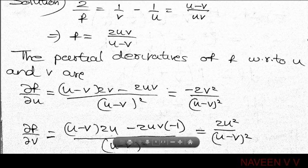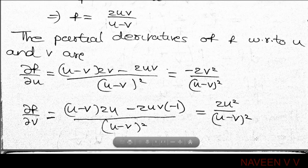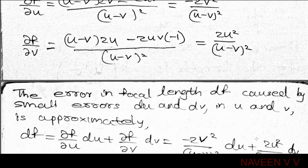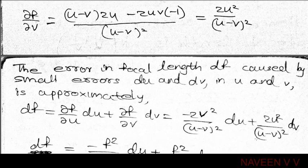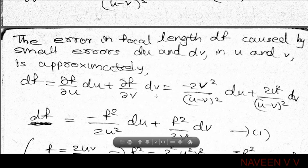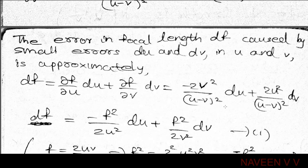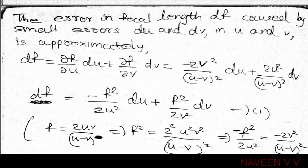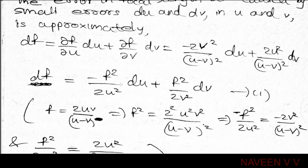The total differential is df = (∂f/∂u)du + (∂f/∂v)dv, which equals [minus 2v² / (u minus v)²] du + [2u² / (u minus v)²] dv. This simplifies to [minus f²/(2u²)] du + [f²/(2v²)] dv.